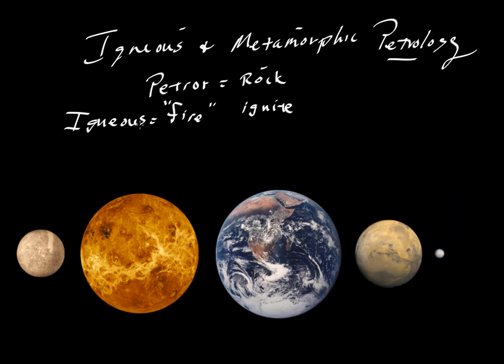When we say igneous, we mean something that is created of fire. So rocks that are generated by very high temperatures like volcanic rocks or plutonic rocks, as we'll talk about a little bit later in the course.